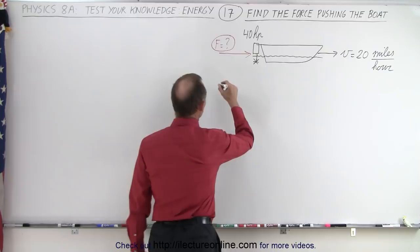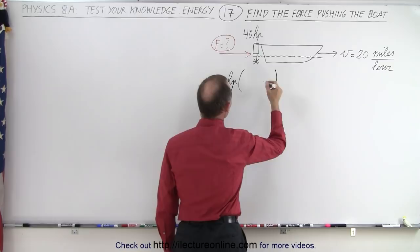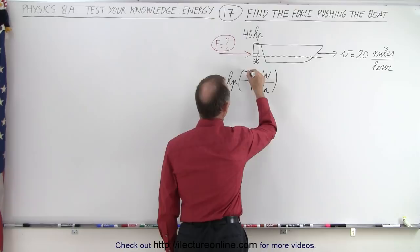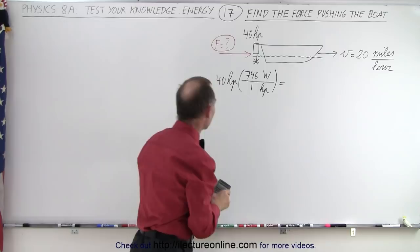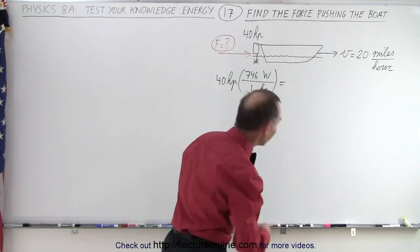So first of all, 40 horsepower can be converted to watts by using this conversion factor. One horsepower is 746 watts. So let's see what that's equal to in terms of watts. 746 times 40 gives us 29,840 watts.